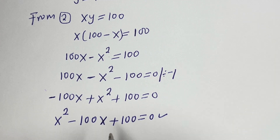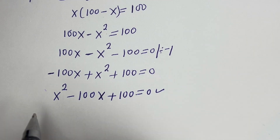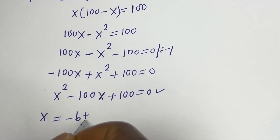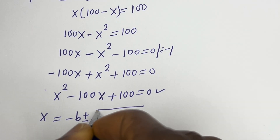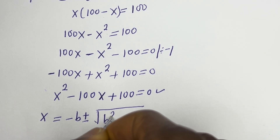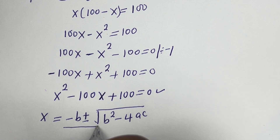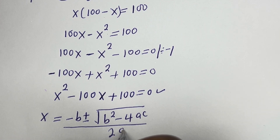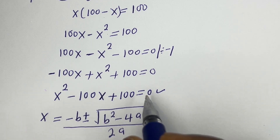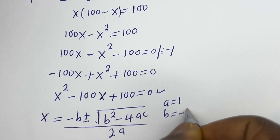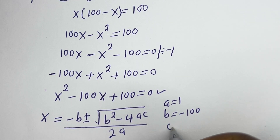This is a quadratic equation. Let's solve this using the quadratic general formula: x is equal to minus b plus or minus square root of (b squared minus 4ac), all over 2a. From this equation, a is equal to 1, b is equal to minus 100, and c is equal to 100.